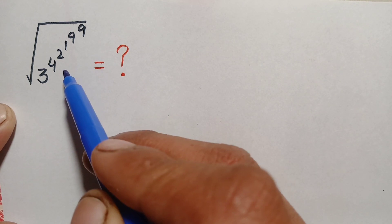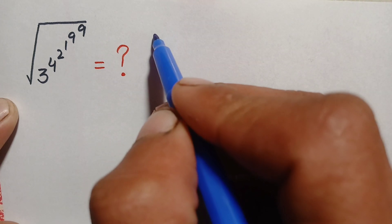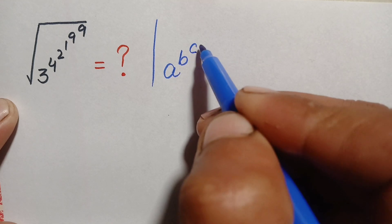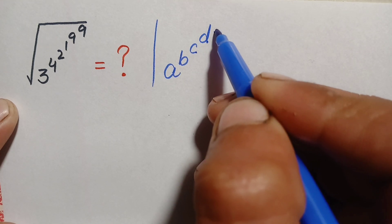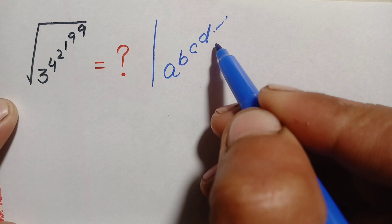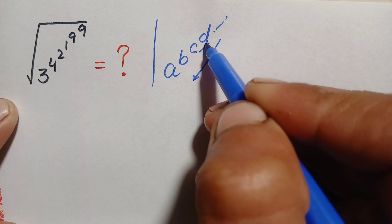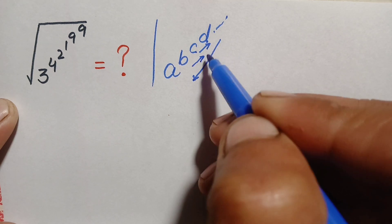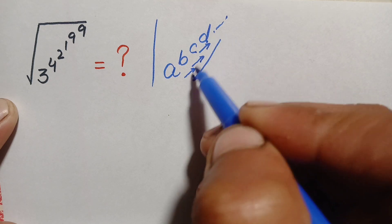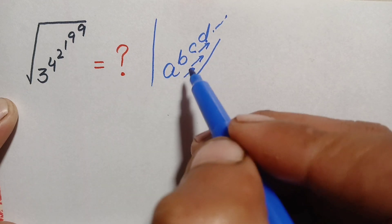If we have any number in this form, there are some specific rules to solve this problem. If we have a number like a raised to the power b, raised to the power c, raised to the power d, and so on, we solve the powers from top to bottom — first c raised to the power d, then b raised to that number, and finally a raised to that number.